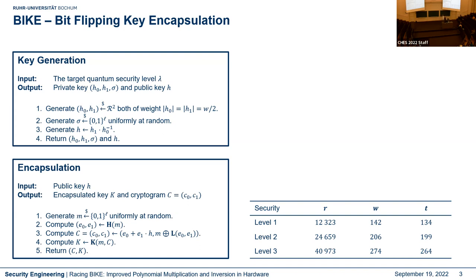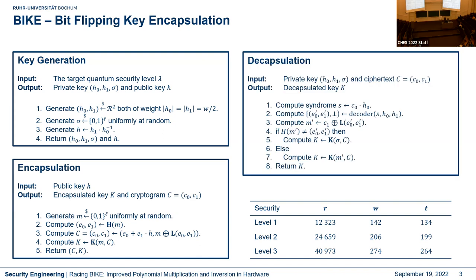In the decapsulation, we use the private keys h0 and h1. First we compute a syndrome which is the product of the first part of the cryptogram c0 multiplied by h0. This syndrome is used in the decoder with the private keys h0 and h1 to recover the error polynomials. The error polynomials are then hashed and XORed with the cryptogram c1 to recover the secret message m, after which we verify and recompute the shared secret key.